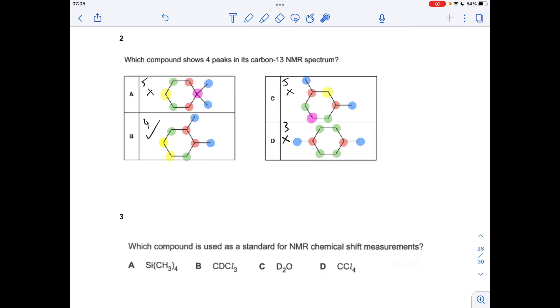And the final one: which compound is used as the standard for NMR chemical shift measurements? We're looking for the formula for TMS here. TMS is tetramethylsilane, which is compound A. It's called four methyl groups, tetramethyl, on a silicon atom, silane. So the answer was A.